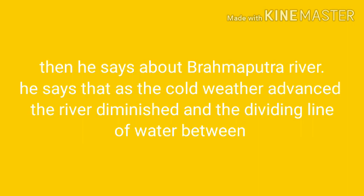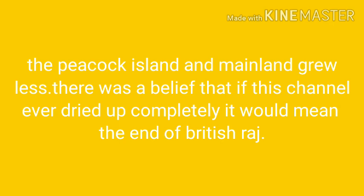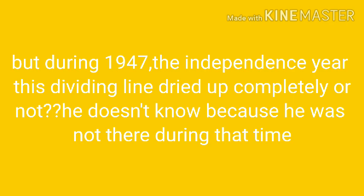Then he talks about the Brahmaputra river. As the cold weather advanced, the river diminished and the dividing line of water between Peacock Island and the mainland grew less. There was a belief that if this channel ever dried up completely, it would mean the end of the British Raj. But during 1947, the independence year, he does not know whether the channel dried up or not, because he was not there at that time.